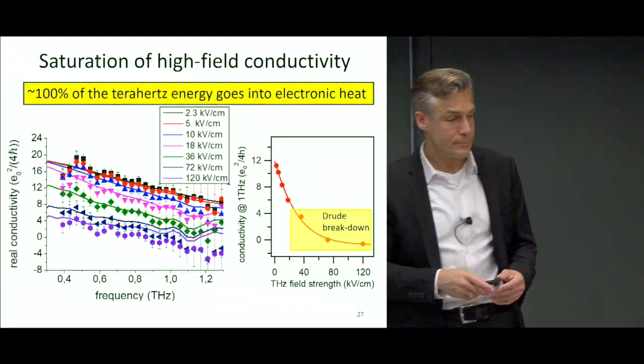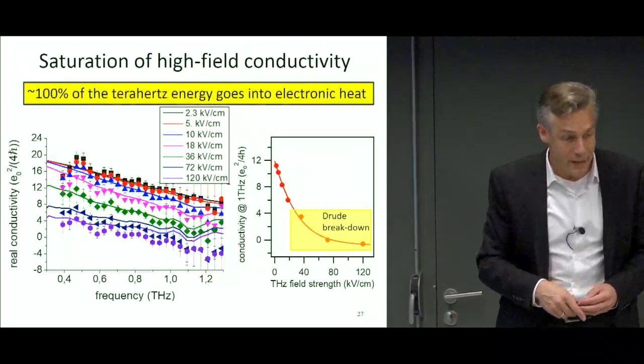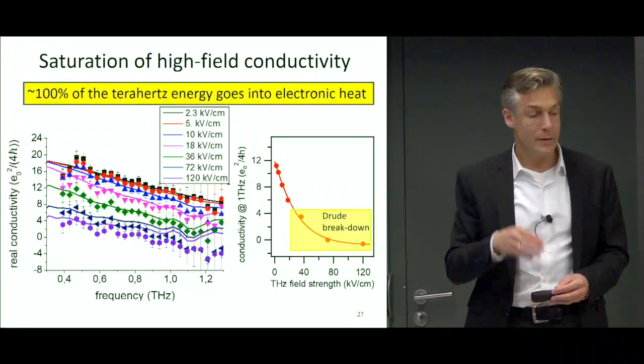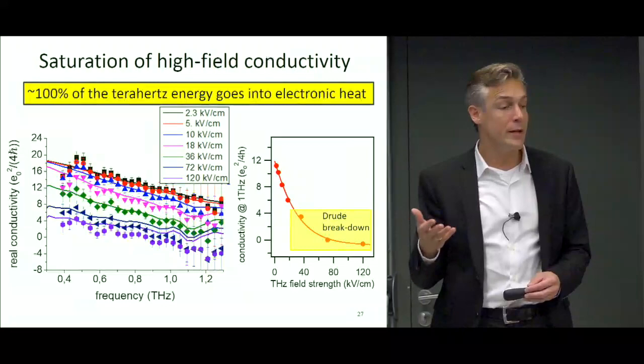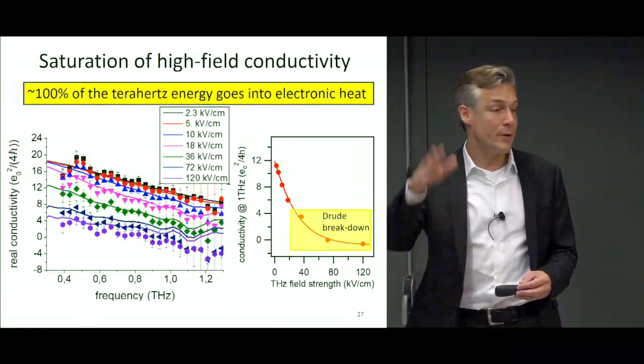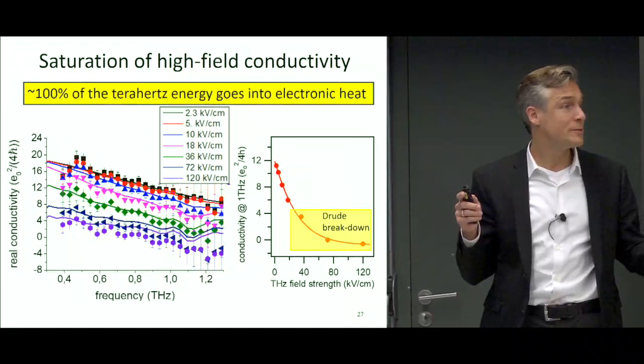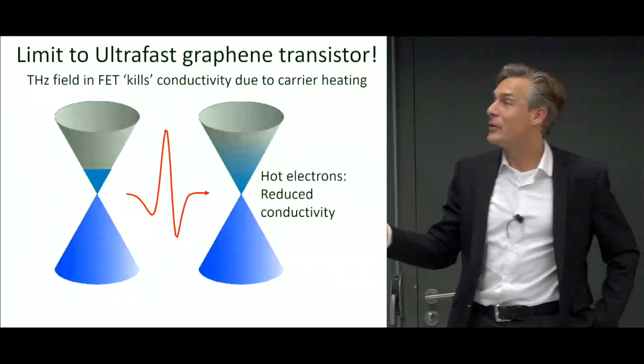The electric field can be replaced by an effective electron temperature. This effective temperature can reach thousands of kelvin because the specific heat of electrons in graphene is very low — so with relatively little energy you can heat the electron bath a lot.